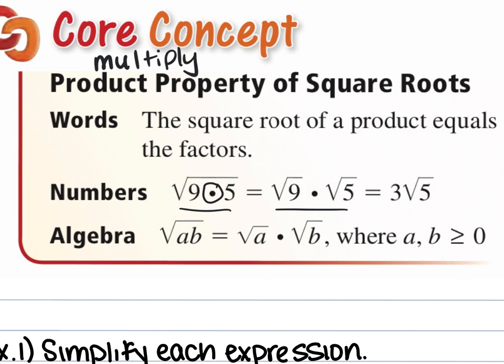Why is this useful? Well, 9 times 5 we knew is 45. We don't know the square root of 45, but when we break it down, do we know the square root of 9? Yes. So we can simplify that to 3. Do we know the square root of 5? No. So we get stuck with this one as part of our answer. But this would be completely simplified. Because you can break down the 9 and take the square root of it, you should always pull out anything that is a perfect square.